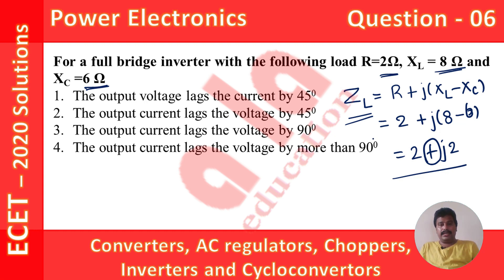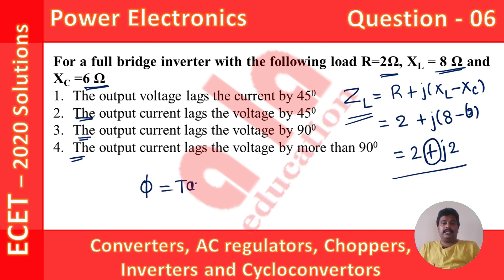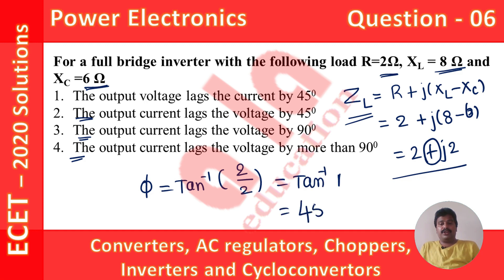The output current lags the voltage. To find the angle, phi = tan⁻¹(X/R), where X = 2 and R = 2, so phi = tan⁻¹(1) = 45 degrees. Therefore, the output current lags the voltage by an angle of 45 degrees, and option 2 is the correct option for this question.